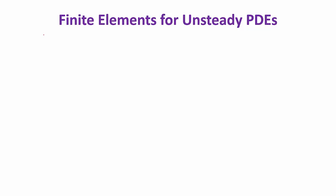Let's use the very simple example of the heat equation. We still have the second order derivative operator, but later on we're going to see that if you change this to some other differential equation, what happens to the time derivative term is going to be the same.